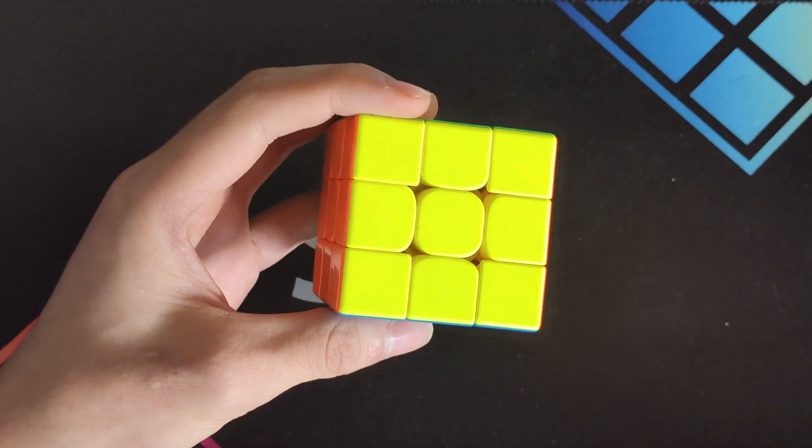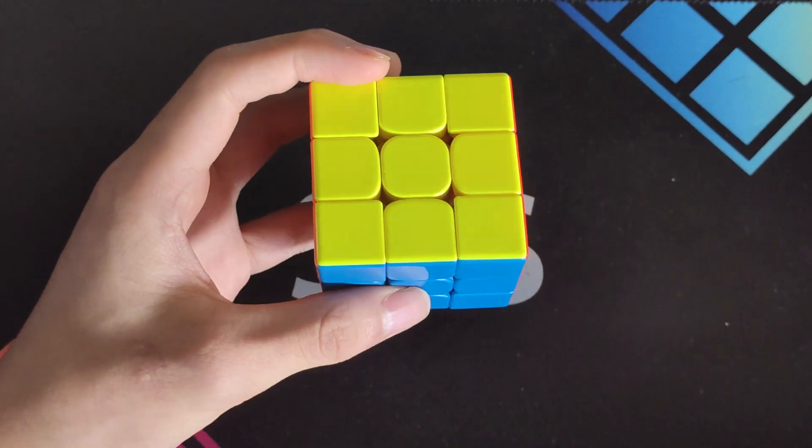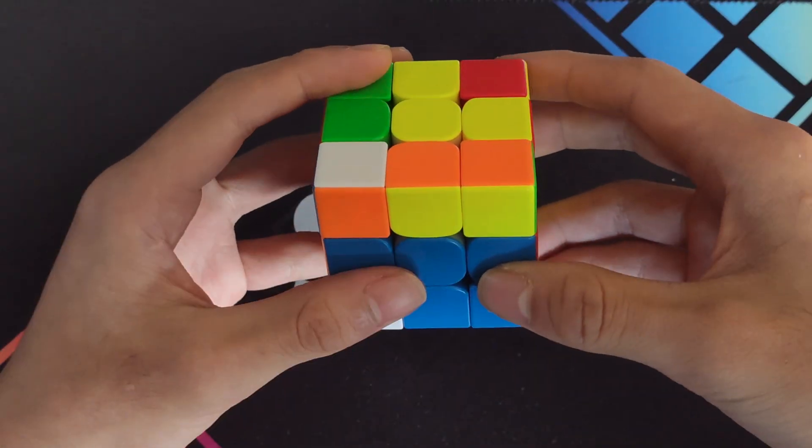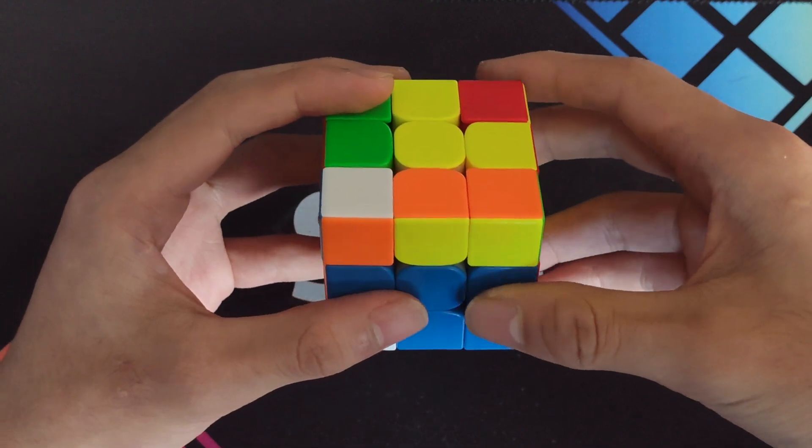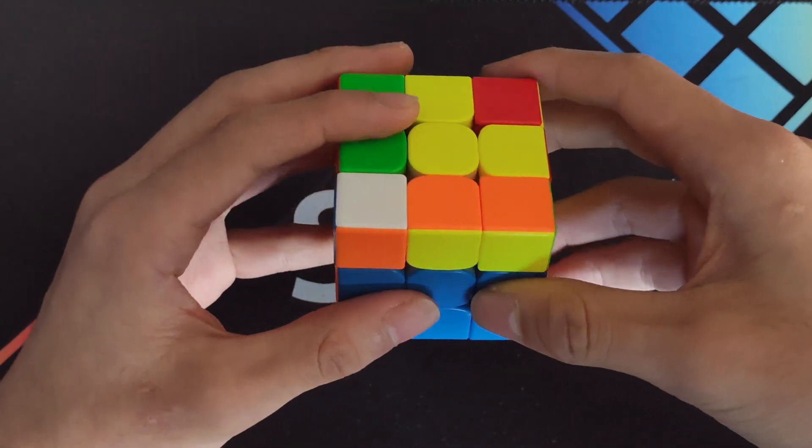However, U2 moves with the non-dominant hand are sometimes very, very necessary with this method, where in some cases, it might be necessary to do a U2 flick with your index and middle fingers of your left hand.